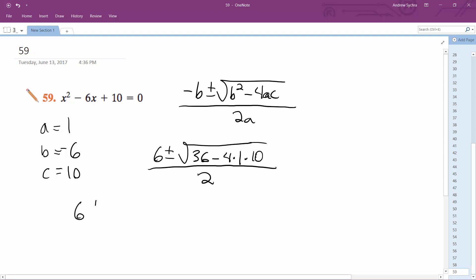So we end up with 6 plus or minus square root of 36, minus 40, which is negative 4. All over 2, this becomes 6 plus or minus 2i over 2.